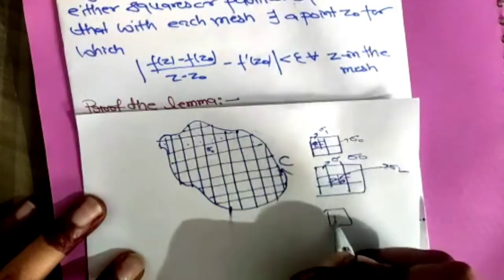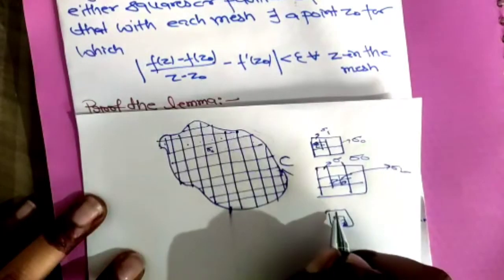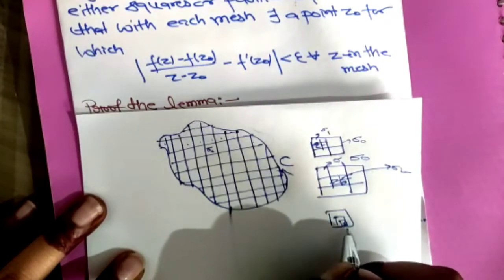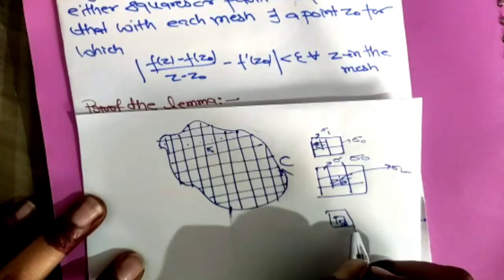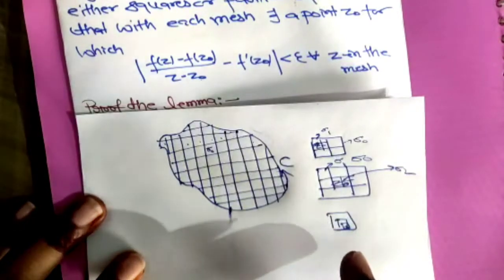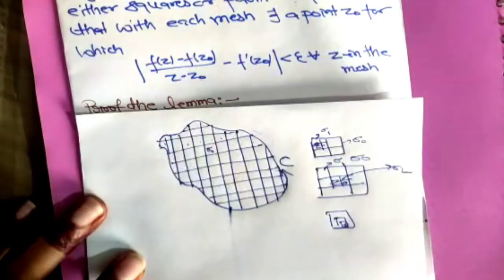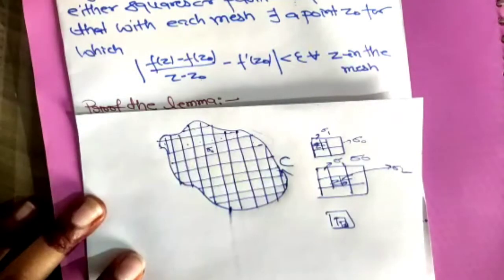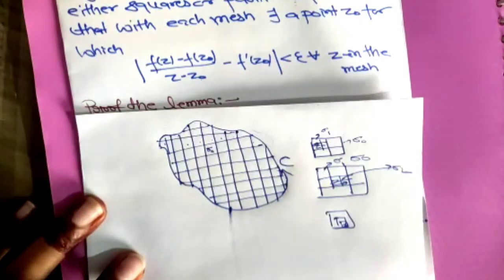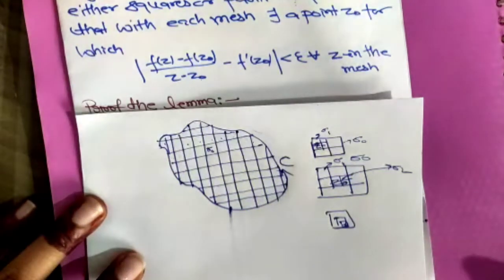After doing this step infinitely many times, we find a mesh where Z0 is common to all — there is a box within a box within a box, and there is a point Z0. All these boxes have this point in common. So Z0 is going to be the limit point for all these meshes. Z0 is the interior point for the contour C, and f(z) is not analytic at this interior point. At that time, we fail at our assumption. So Cauchy's lemma is proved true.